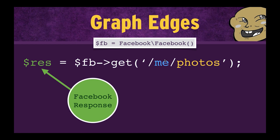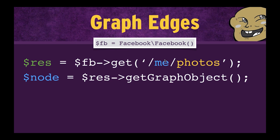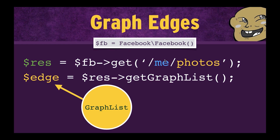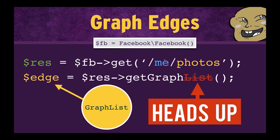Graph edges are a relationship between more than one node. For example, on the Graph API, if we were to hit the endpoint me/photos, photos returns a list of photo nodes — this is the photo edge. So I send a GET request, it returns a Facebook response. You might be tempted to use getGraphObject again, but we can't do this because we're getting a list of nodes back. So in the SDK, we access the edge from a method called getGraphList — which, yeah, is also another horrible name for something that's actually an edge. Heads up: in 4.2, that's probably going to be called getGraphEdge.